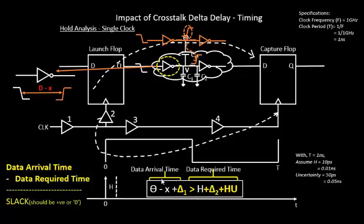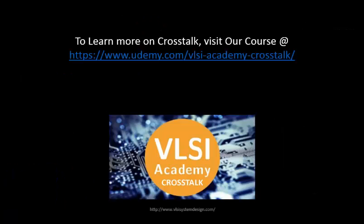Basically, your data arrival time becomes more and more less than the data required time, and as a result of that, you see the slack going into the negative direction. It's purely due to cross-stroke delta delay.